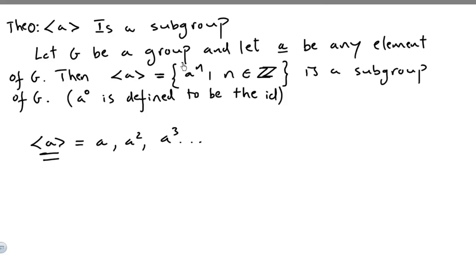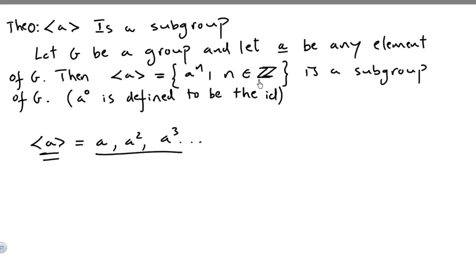Let G be a group and let A be any element of G. The set generated by A — the set of A to the power of n, such that n is an integer — is a subgroup of G. A to the power of 0 is defined to be the identity.